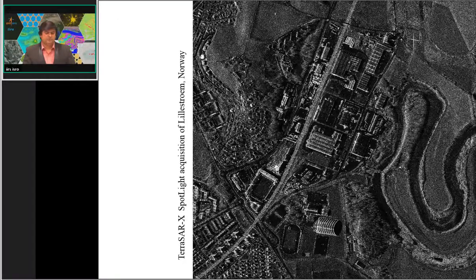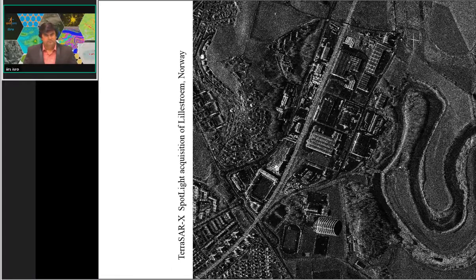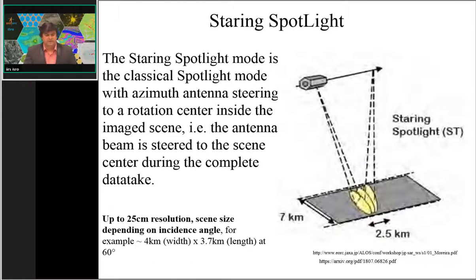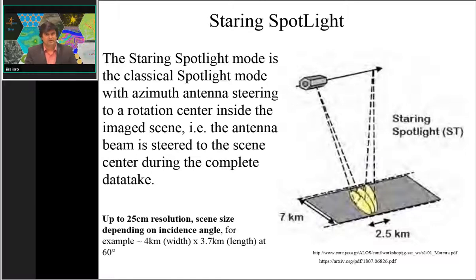In spotlight mode, an example shows a TerraSAR-X image of a city in Norway acquired in normal spotlight mode. In normal or sliding spotlight mode, the dataset has approximately one meter resolution. In staring spotlight mode, the sensor is focused toward the center of the scene to identify one small object, resulting in a very small swath but very high resolution.